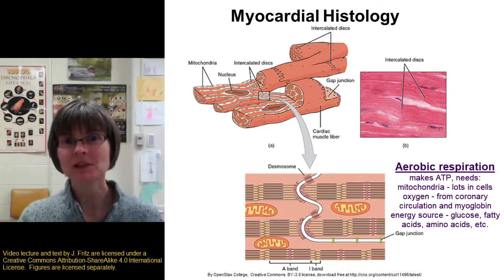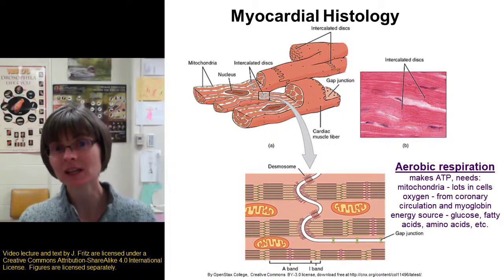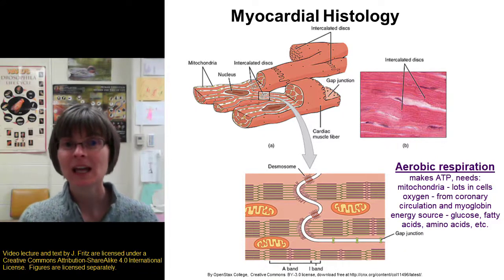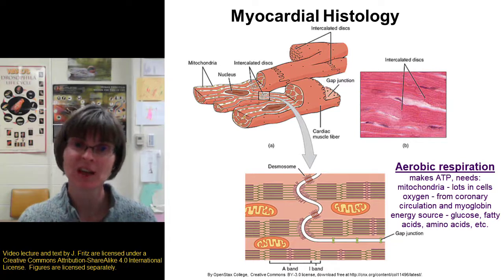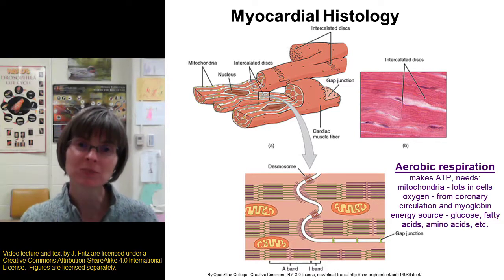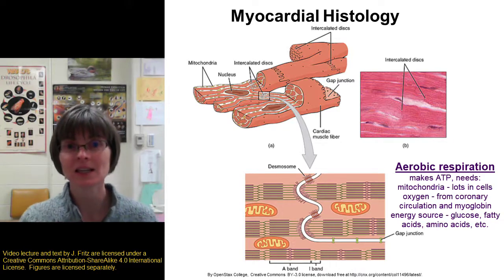In addition to having good circulation bringing oxygen to the cells, the cardiac muscle cells also have a lot of myoglobin inside. Myoglobin is a molecule similar to hemoglobin — it binds to oxygen and stores oxygen inside the cardiac muscle cells. So even if the oxygen supply is briefly interrupted, there's still oxygen available on the myoglobin to keep those heart cells pumping.